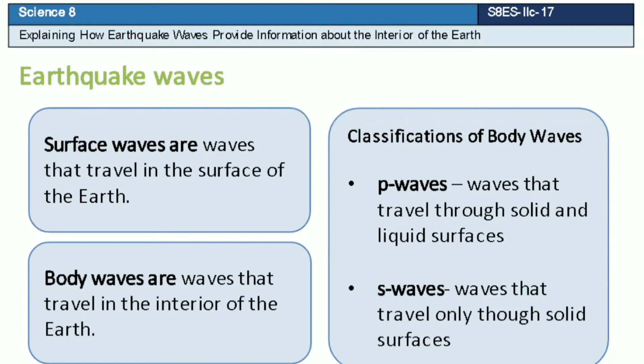Surface waves are waves that travel on the surface of the Earth. Body waves are waves that travel in the interior of the Earth. Body waves are further classified into two: P waves and S waves. We will only discuss body waves since they are the waves traveling in the interior of the Earth.